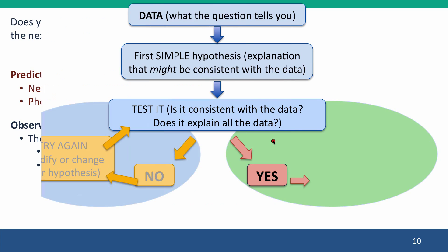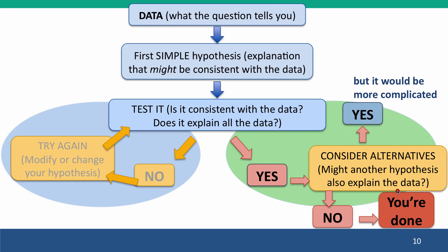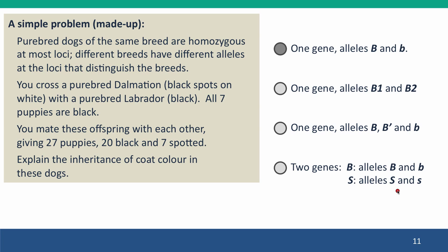But not so fast. Let's go back to our scheme. We have a hypothesis that explains the data — it's consistent with all the data. But we haven't considered the alternatives. Might another hypothesis also explain the data? So let's go back to the other hypotheses we had when we started the problem. The first one said one gene, alleles big B and little b — that one fits. The second one says one gene, alleles B1 and B2. Well, that one fits too; we just have to say B1 is dominant to B2. So that's essentially the same hypothesis, but with less information in it — it's a weaker version of the same hypothesis.